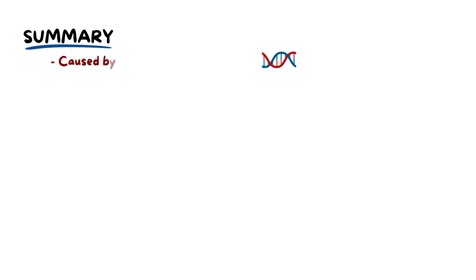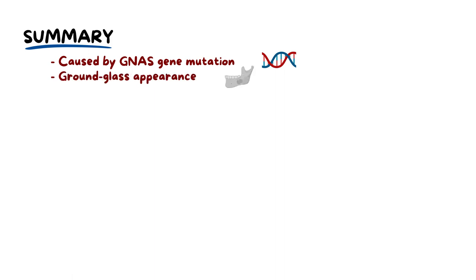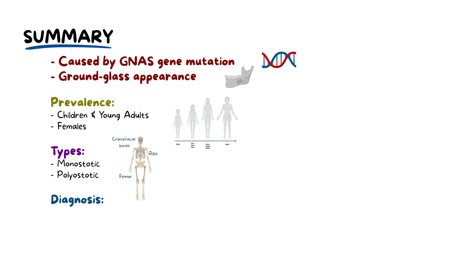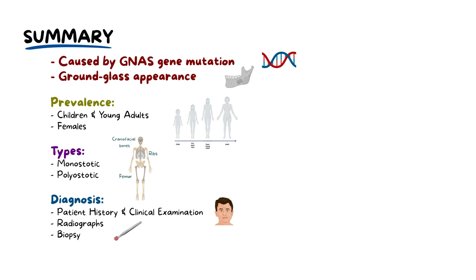To summarise, fibrous dysplasia caused by a GNAS gene mutation replaces normal bone with fibrous tissue. This is evident as a ground glass appearance on radiography. Typically affecting children and young adults, especially females, it is classified as monostotic or polystotic. In dentistry, diagnosis usually involves history taking, examination, radiographs and biopsy. Treatment, while not curative, manages symptoms through medications and surgery.